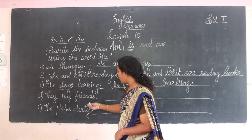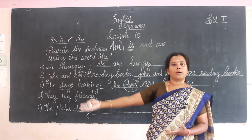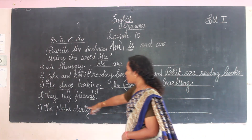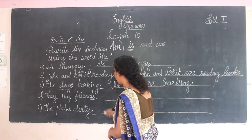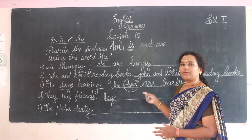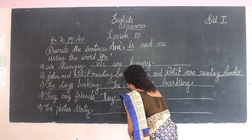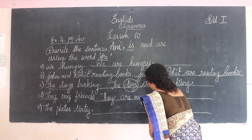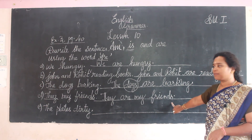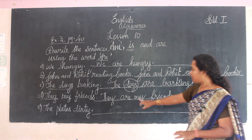Fourth: 'They my friends.' 'They' is a pronoun and it is plural. So we write: 'They are my friends.' Fifth: 'The plates dirty.' Plates is a thing and plural — there is an 'S'. So we write: 'The plates are dirty' — D-I-R-T-Y.